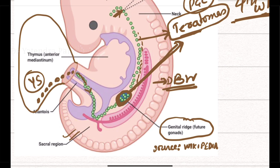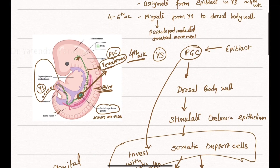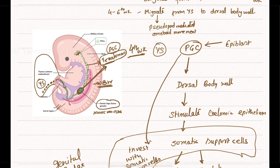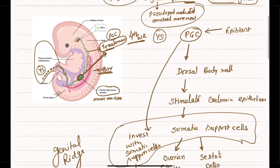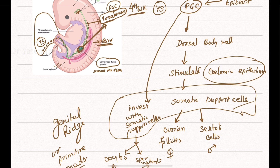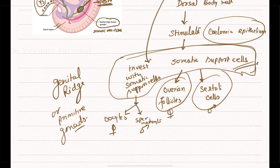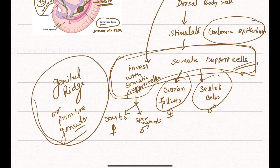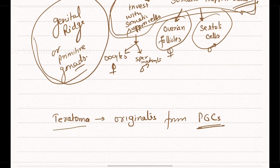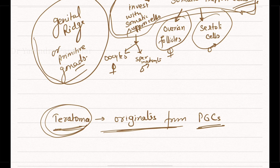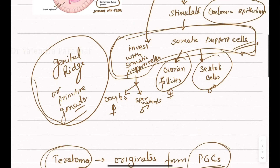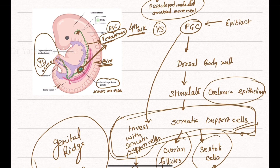We will discuss teratomas further in the next class. Today we have learned that primordial germ cells are the precursor of gametes. These cells arise from the epiblast in the yolk sac around the fourth week of gestation and migrate towards the dorsal body wall around four to six weeks of gestation via pseudopod movements. There they stimulate the coelomic epithelium to form support cells, which form ovarian follicles and Sertoli cells, and these structures form the genital ridge of primitive gonads. Thank you, have a good day.